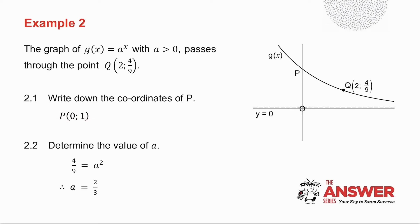To determine the value of a, I take the point q that lies on the graph. In place of x goes 2, and in place of y goes 4 over 9. So I get that a squared equals 4 over 9. I told you that a is greater than 0, which means a has to be 2 thirds.